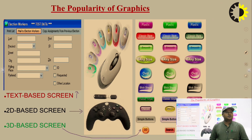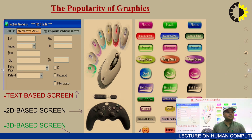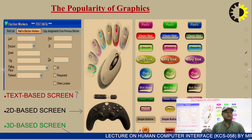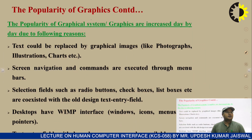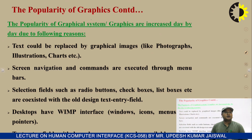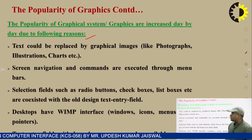The next topic is the popularity of graphics. The popularity of graphics is increasing day by day. There are three types of graphics used: text-based screens, 2D-based screens, and 3D-based screens. Earlier, text-based screens were used; now 2D-based and 3D-based screens are used, which is why popularity is growing. Graphical systems are increasing day by day due to the following reasons.